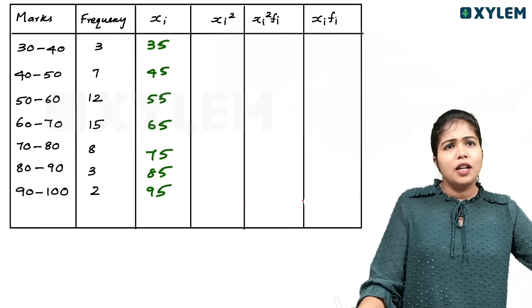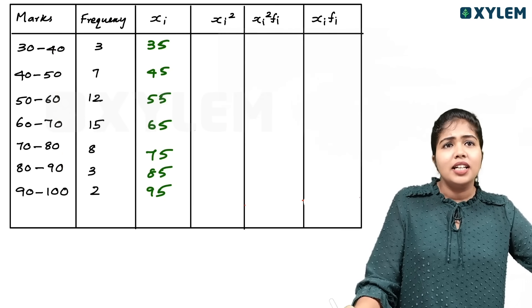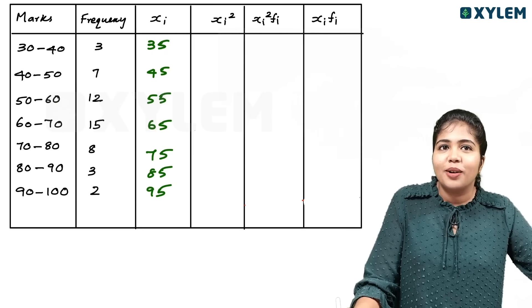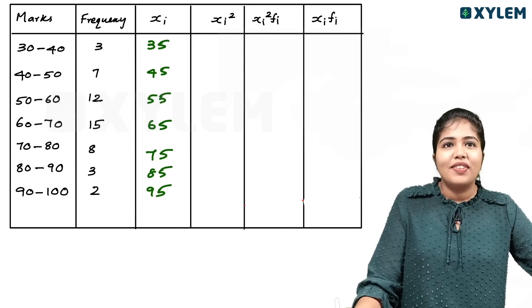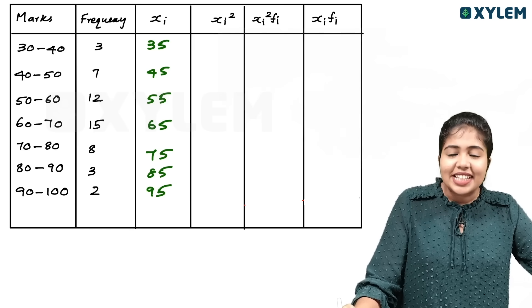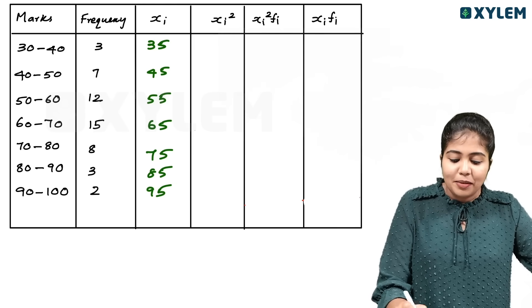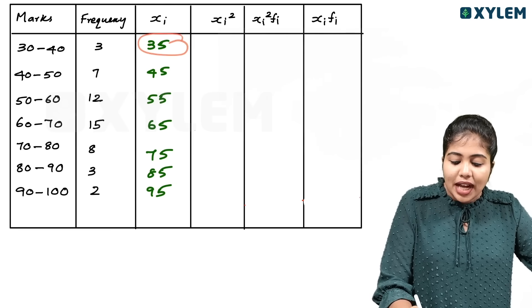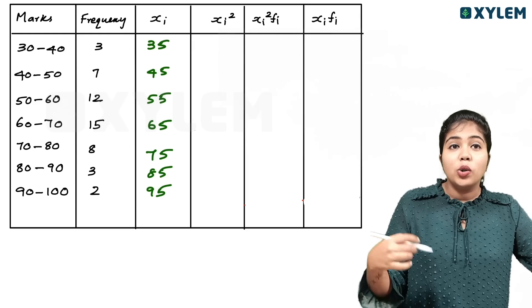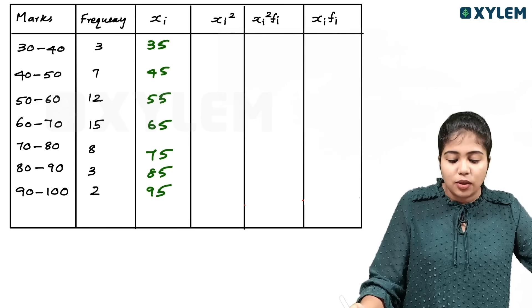First column is class, second column is frequency, third is xi, fourth is xi squared, fifth is xi squared fi, sixth is xi fi. Now you have the xi squared — you will have one column of xi squared. The 35th score gives 1225, and the 45th score gives 2025.